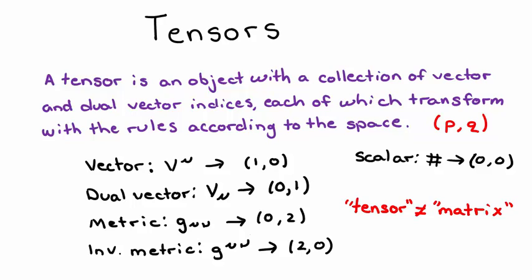In order to be considered a tensor, an object must transform according to the rules of the space. Not all matrices follow these transformation rules, so we can't naively classify all matrices as 2-index tensors.